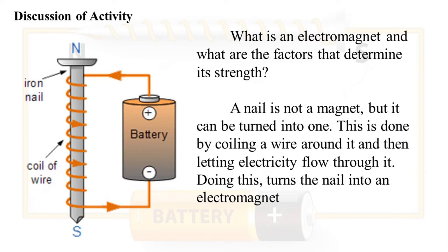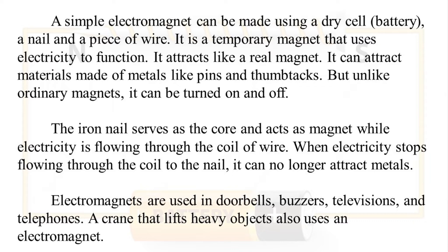What is an electromagnet and what are the factors that determine its strength? A nail is not a magnet, but it can be turned into one. This is done by coiling a wire around it and then letting electricity flow through it. A simple electromagnet can be made using a dry cell battery, a nail, and a piece of wire. It is a temporary magnet that uses electricity to function. It attracts like a real magnet and can attract materials made of metals like pins and thumbtacks. But unlike ordinary magnets, it can be turned on and off. The iron nail serves as the core and acts as a magnet while electricity is flowing through the coil of wire. When electricity stops flowing through the coil to the nail, it can no longer attract metals.